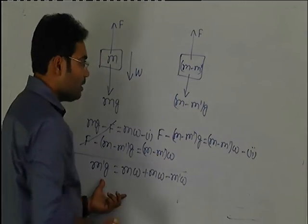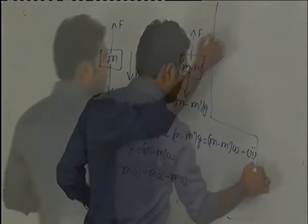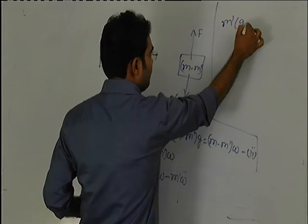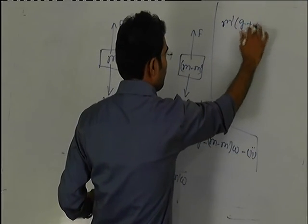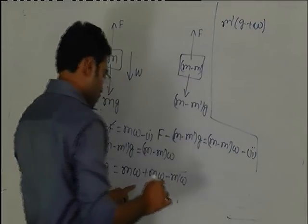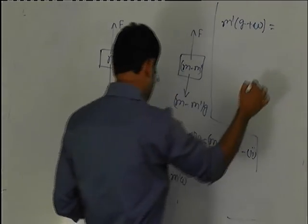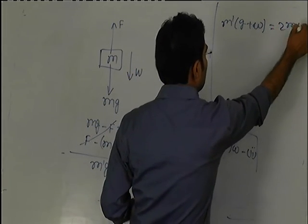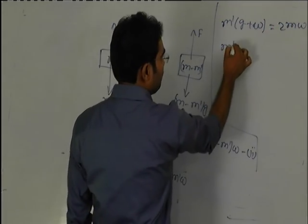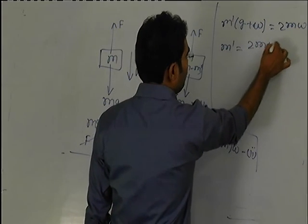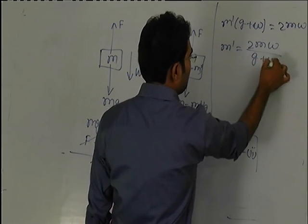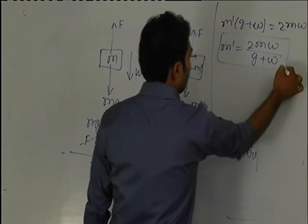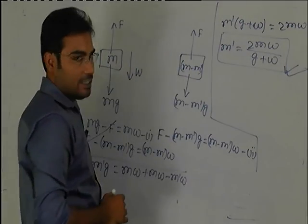I'll write the final result here: m'(g + w) equals 2mw, so m' equals 2mw divided by (g + w). This is the final result of this problem. Thank you.